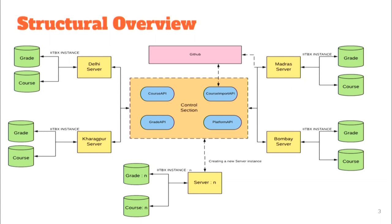Now we look at the structural overview of the project. At the center we have the control section, and it works with different APIs: the course API, course import API, grade API, and platform API. These APIs manage and control various instances created using the IITBX platform, such as the Madras server, Bombay server, Delhi server, and Kharagpur servers.